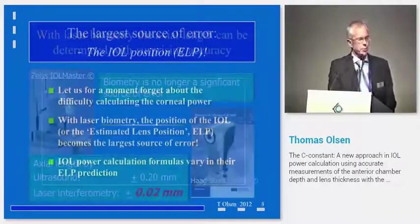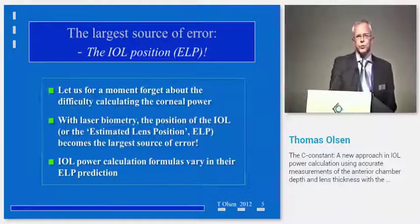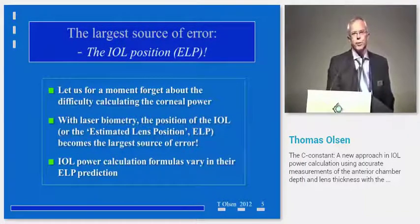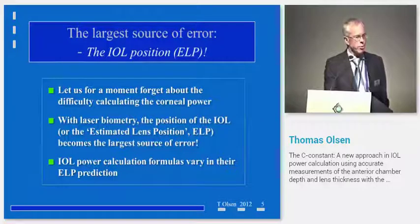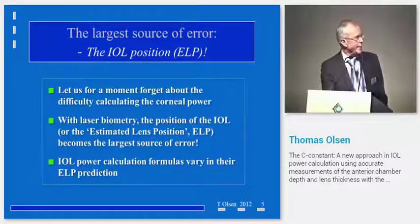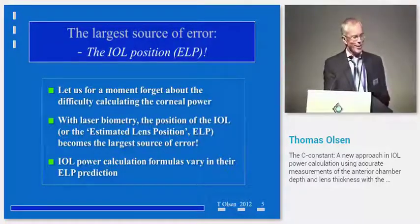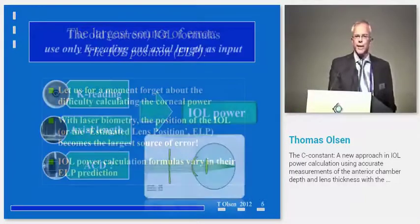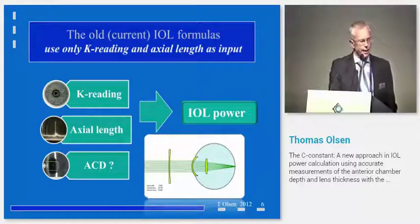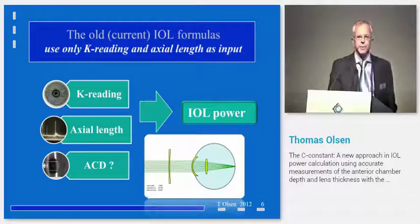This is what I'm going to talk about, because one of the largest sources of error in any formula is actually how you predict the position of the implant after surgery. I'm not going to talk about the difficulties when we deal with post-LASIK cases, but I will take questions afterwards. You have to realize that all the formulas have one weakness, and that is how they actually calculate the exact position of that implant.